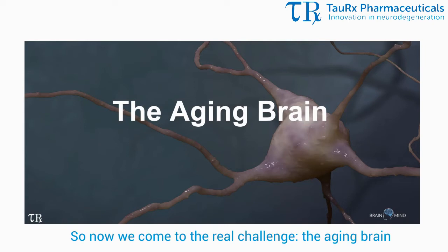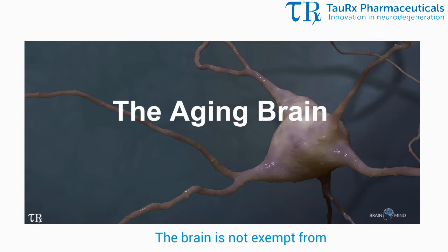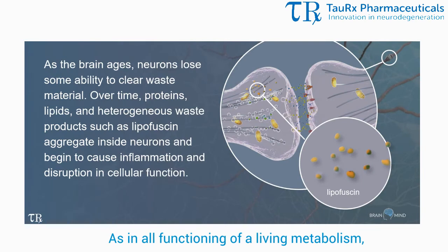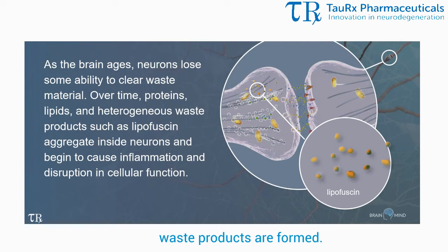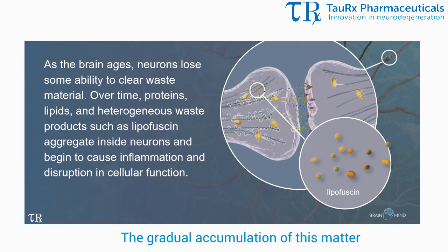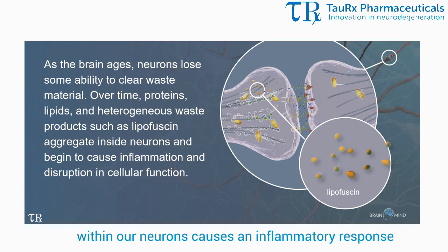So now we come to the real challenge: the aging brain. The brain is not exempt from the normal aging processes of our body. As in all functioning of a living metabolism, waste products are formed, and with age our ability to clear such waste diminishes. The gradual accumulation of this matter within our neurons causes an inflammatory response, which starts to affect cellular function.